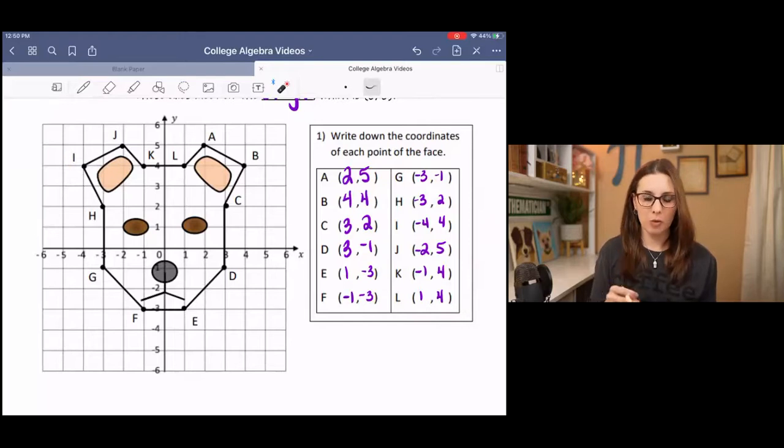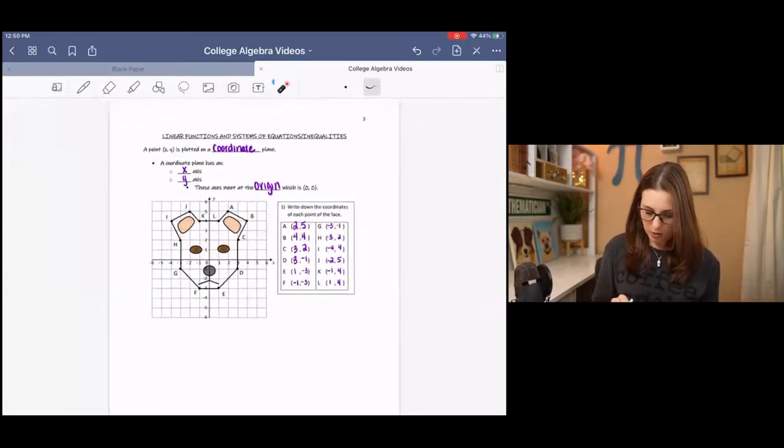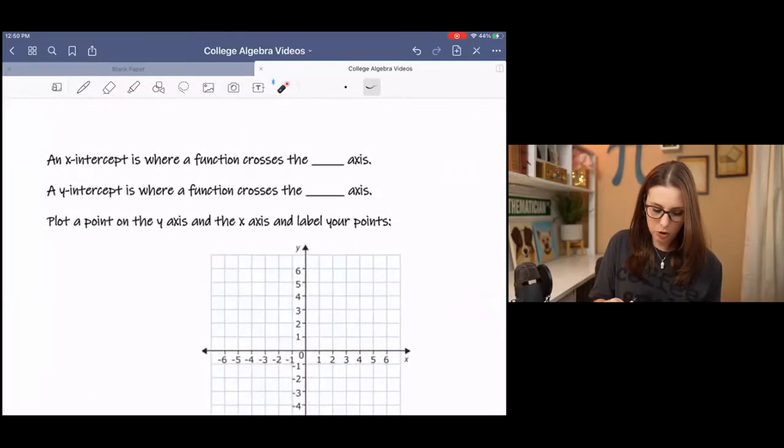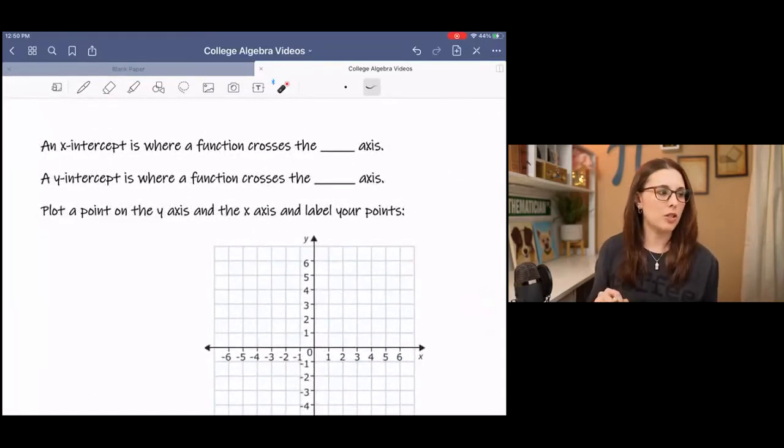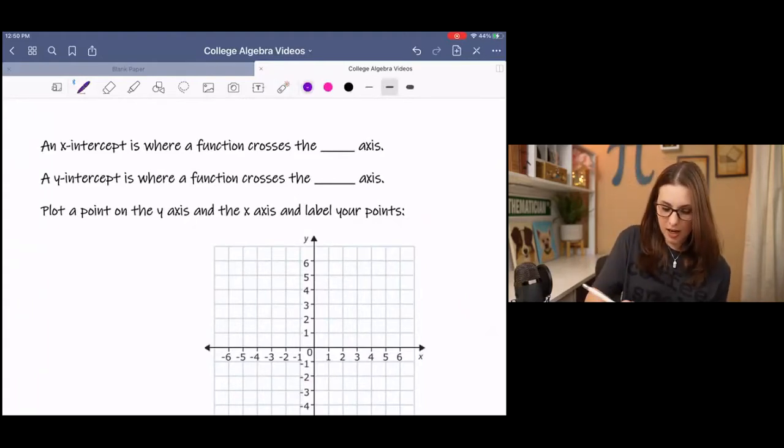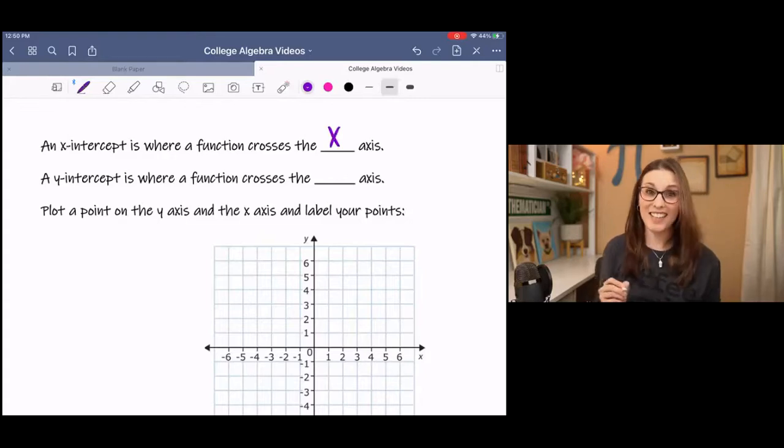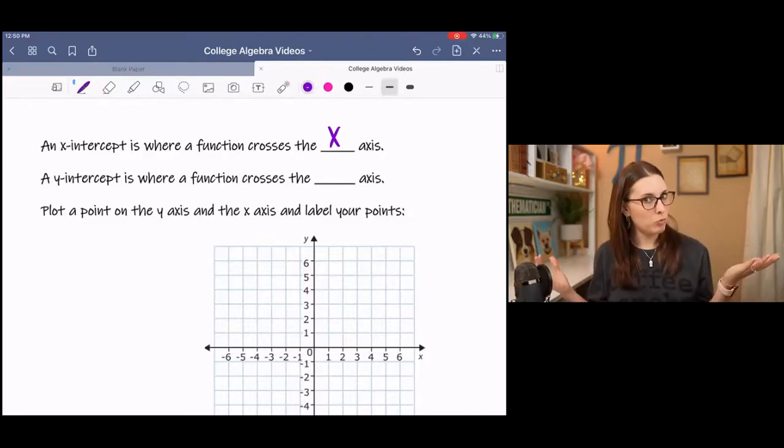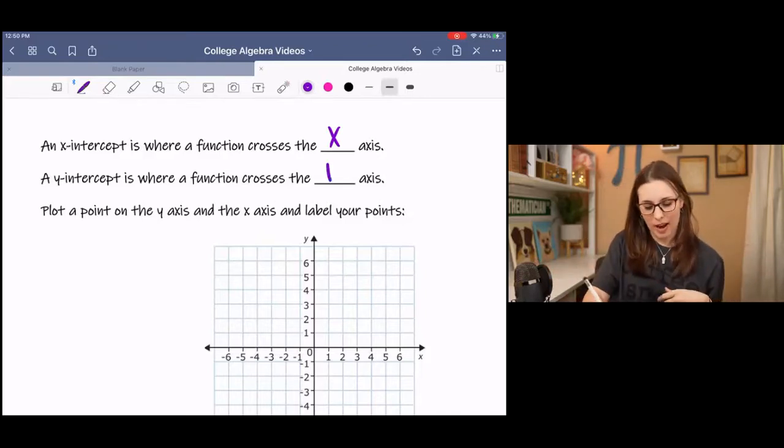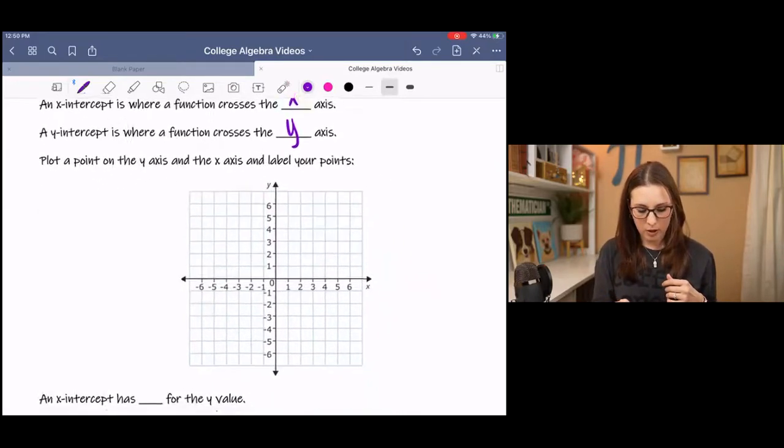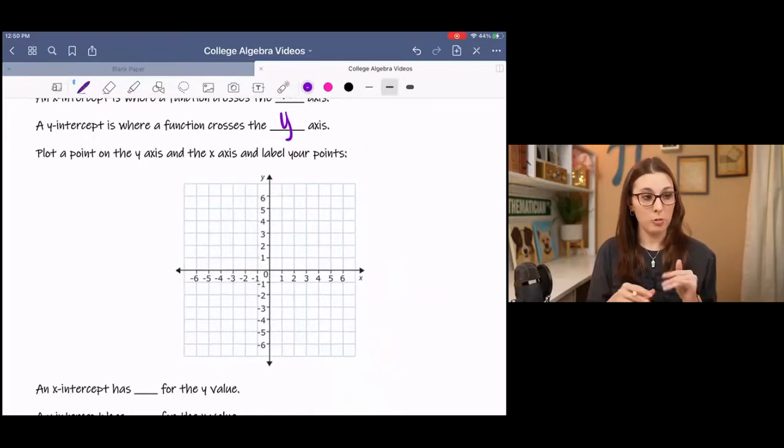It always goes x, y, not too bad. So that was just a quick review, which will take us to the point of the lesson, which is x and y intercepts. An x-intercept is where a function crosses the x-axis, which kind of makes sense. The y-intercept is where the function crosses the, would you guess it, y-axis. So plot a point on the y-axis and the x-axis and label your points. You can pick any point you want. It doesn't matter. The points you pick might be different from the points I pick.